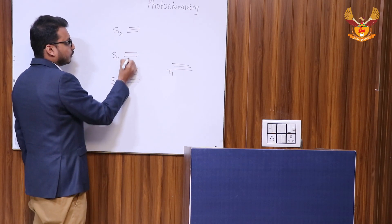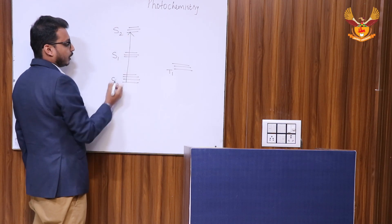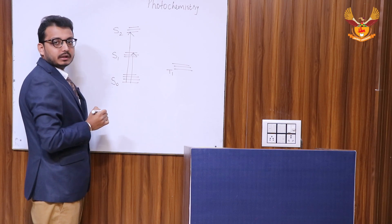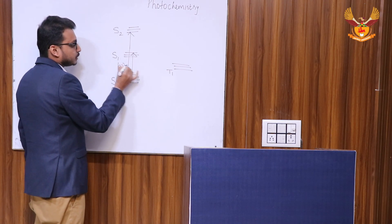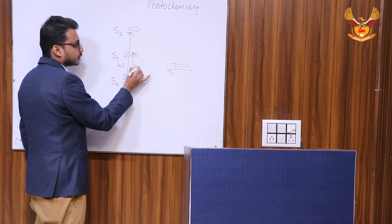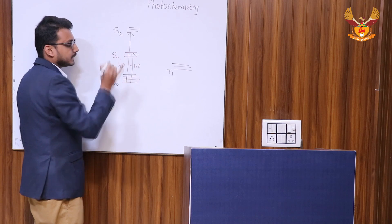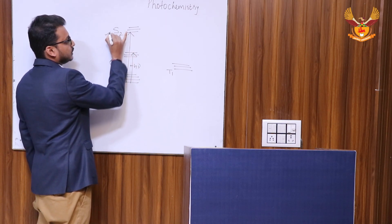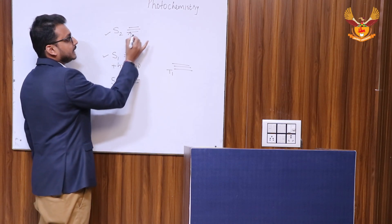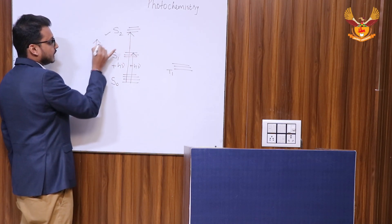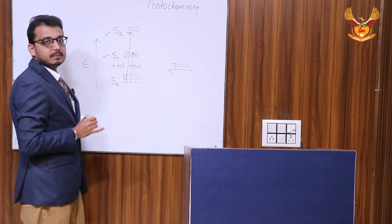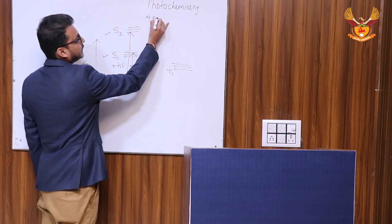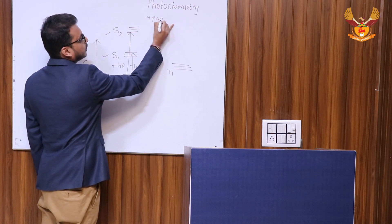This is the triplet state T₁. The molecule, while moving from ground state to excited state, can move from S₀ to S₂ or from S₀ to S₁. This process occurs by the absorption of light, represented as hν. Now the molecule which is already in the S₂ or S₁ state tries to lose its energy, because energy is inversely related to stability. So the molecule can undergo four processes.